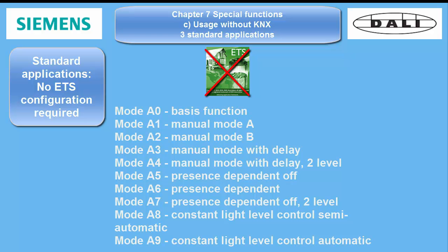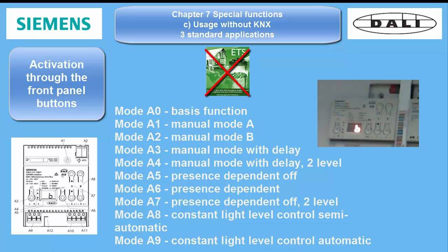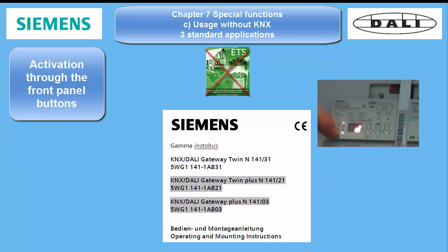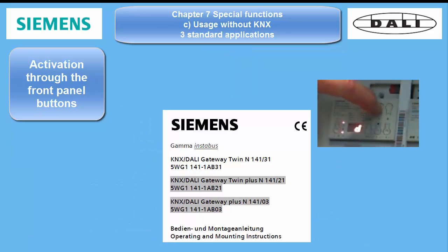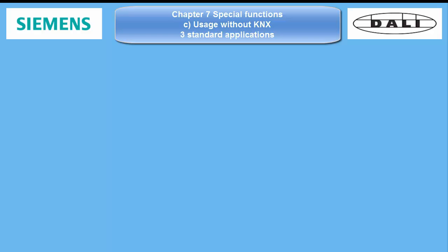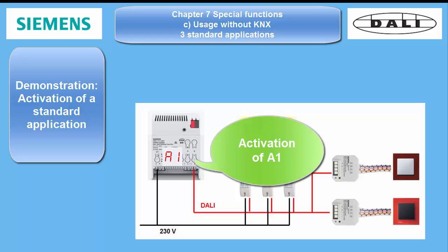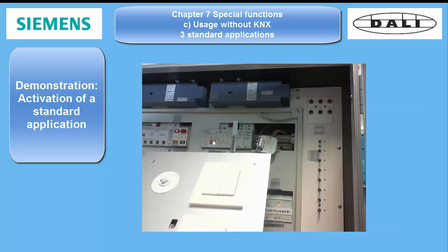These standard applications can be activated using the keys on the device's front side. How to operate these functions is described in the mounting instruction leaflet BMA, which is attached to the package or can be downloaded from the gamma technical data website. I will now demonstrate how to activate standard application A1 for two channels with some ECG and one pushbutton interface on each channel.